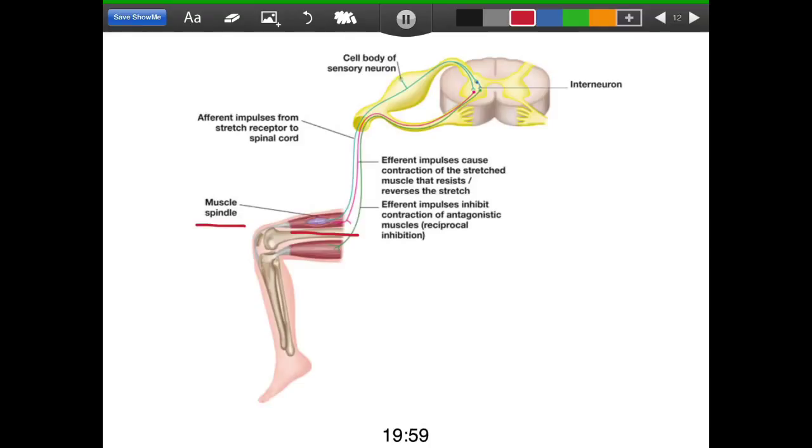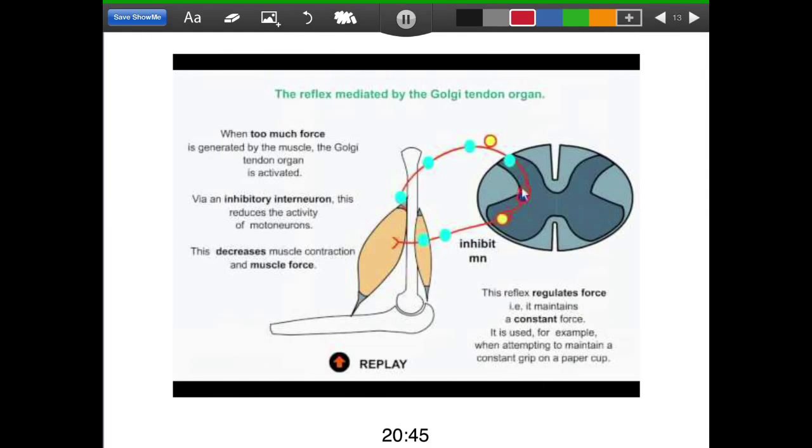This synapses with alpha motor neurons and causes immediate contraction of that quadriceps muscle, so that the stretch of the muscle is fought against and the posture of the leg is maintained. At the same time, inhibitory neurons are activated. We can see this interneuron is an inhibitory neuron, and that goes and innervates the antagonist muscle—as we can see, that's the hamstrings here—and that inhibits activation of the hamstrings so that contraction of the quadriceps is easier.